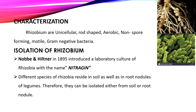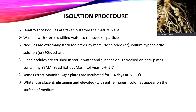Nob and Hillner in 1895 introduced the laboratory culture of Rhizobium. Different species of Rhizobium reside in soil as well as in the root nodules of legumes, and therefore they can be isolated either from soil or root nodules. In the isolation procedure, healthy root nodules are taken from the mature plant, washed with sterile distilled water to remove soil particles, and then externally sterilized using mercuric chloride, sodium hypochlorite solution, or 90% ethanol.